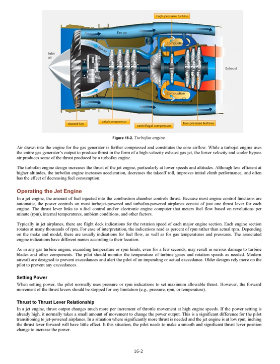The associated engine indications have different names according to their location. As in any gas turbine engine, exceeding temperature or RPM limits — even for a few seconds — may result in serious damage to turbine blades and other components. The pilot should monitor turbine gas temperatures and rotation speeds as needed. Modern aircraft are designed to prevent exceedances and alert the pilot of an impending or actual exceedance. Older designs rely more on the pilot to prevent any exceedances.